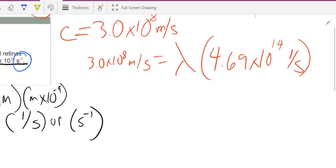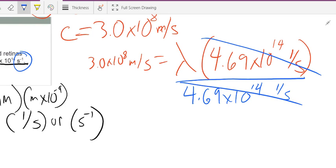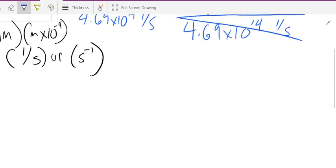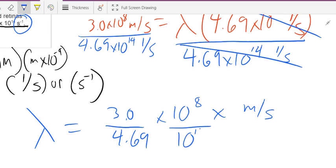So, let's divide both sides by 4.69 times 10 to the 14th. Now, when I do math like this, I always like to separate it as much as possible. So, I'm going to put 4.69 here, I'm going to put 10 to the 14th here, and I'm going to put 1 over seconds here. Does everyone see how I did that?